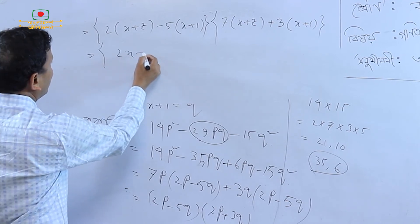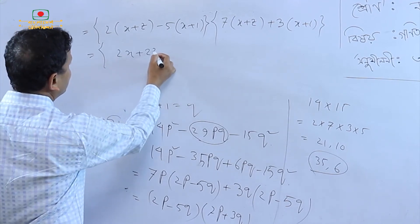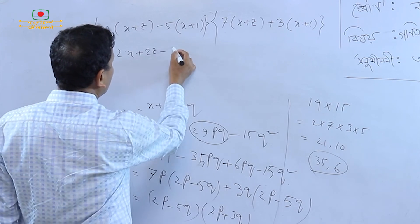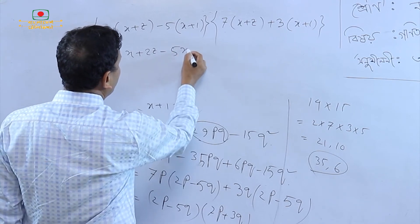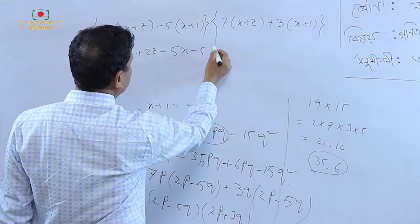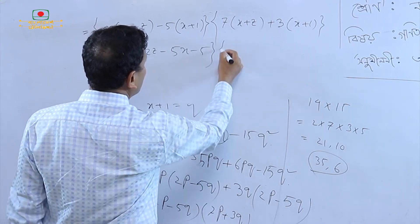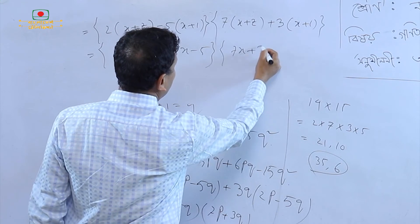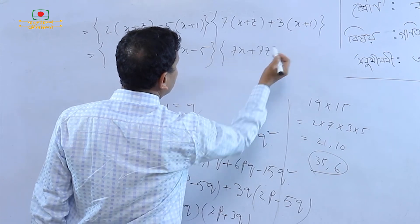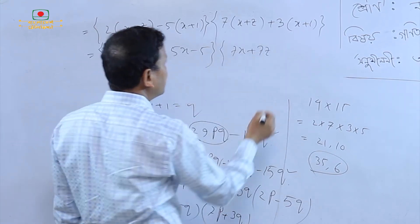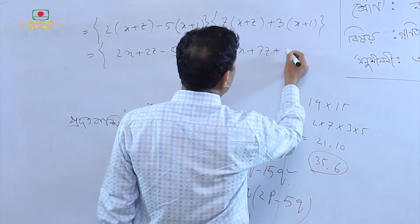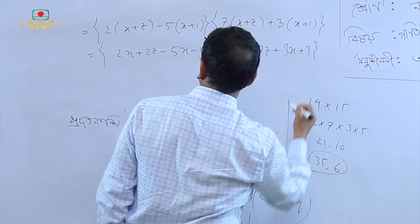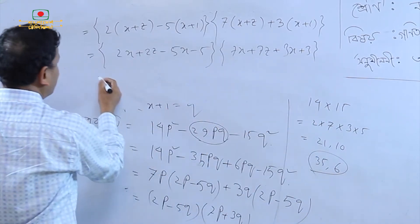So we get: 2x plus 2z minus 5x minus 5, times 7x plus 7z plus 3x plus 3.